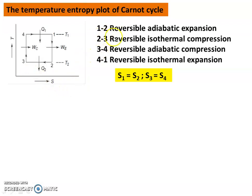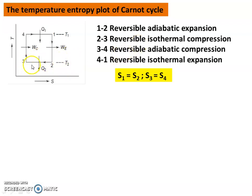The Carnot Cycle has four processes. Process 1 to 2 is Reversible Adiabatic Expansion — there is no change in entropy, so S1 equals S2. Process 2 to 3 is Reversible Isothermal Compression, where temperature is constant at T2. During this compression process, heat is rejected — Q2 is the amount of heat rejected.